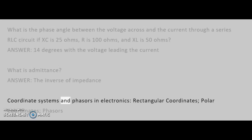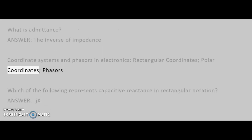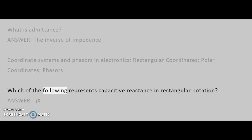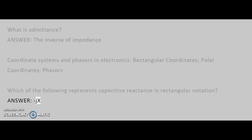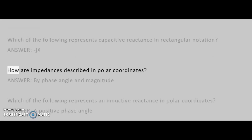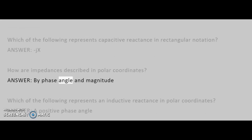Coordinate systems and phasors in electronics group covers: rectangular coordinates, polar coordinates, and phasors. Which of the following represents capacitive reactance in rectangular notation? Answer: -jX. How are impedances described in polar coordinates? Answer: By phase angle and magnitude.